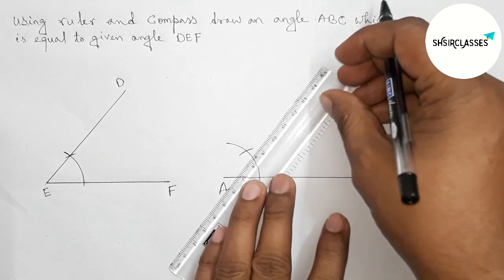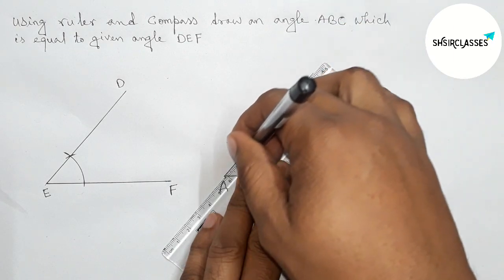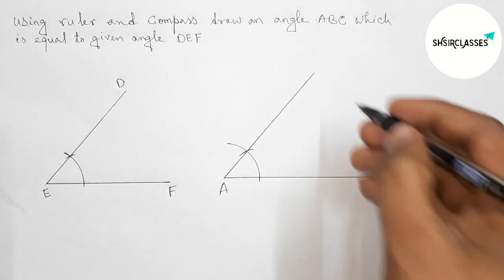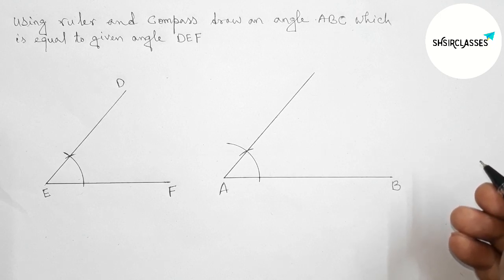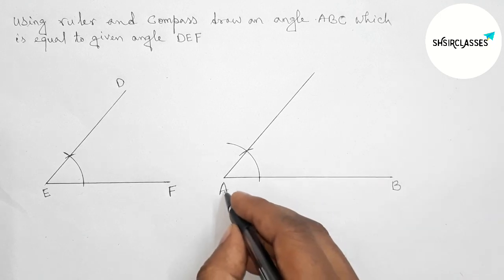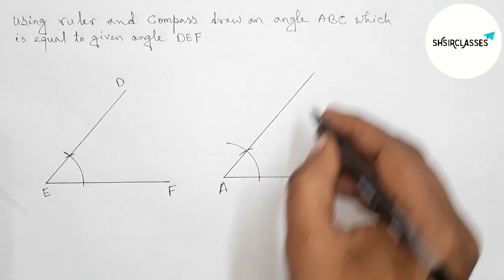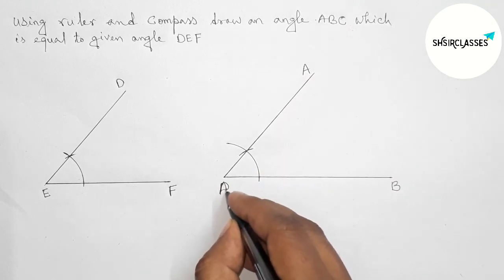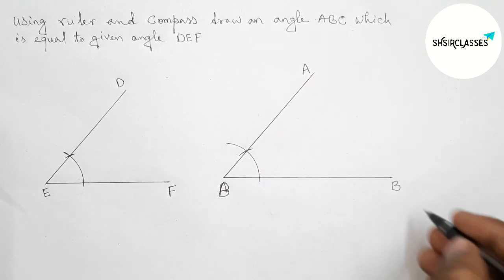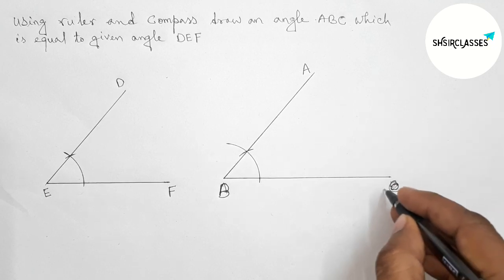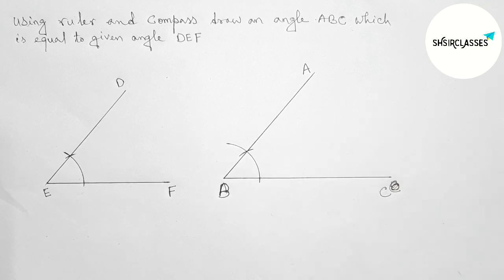Okay, next joining this to complete this angle. Now here getting some wrong, so here this will be B. So first taking here point A and this will be B and here this will be C. So here this is C.